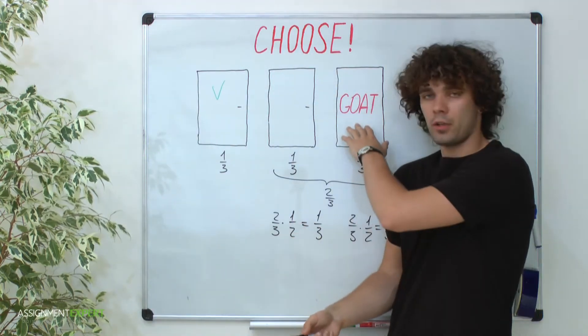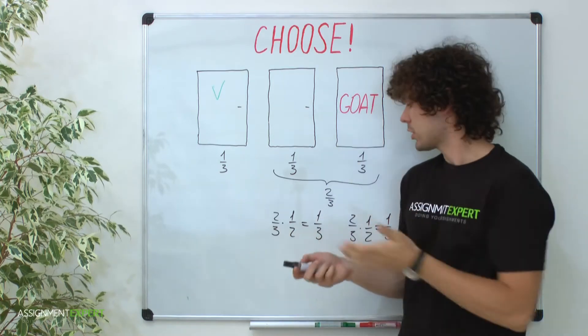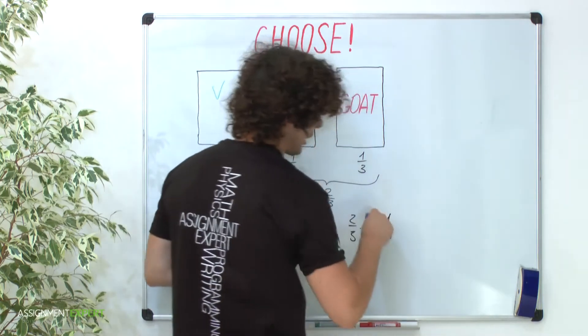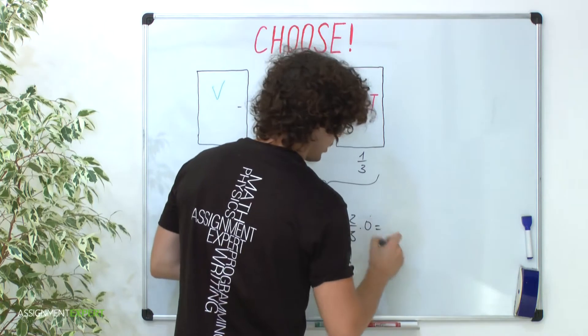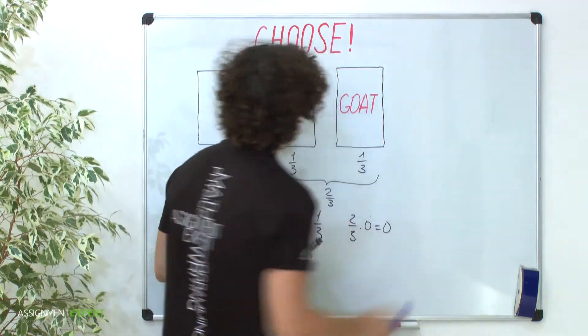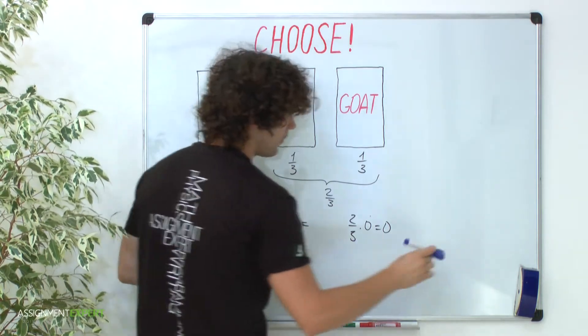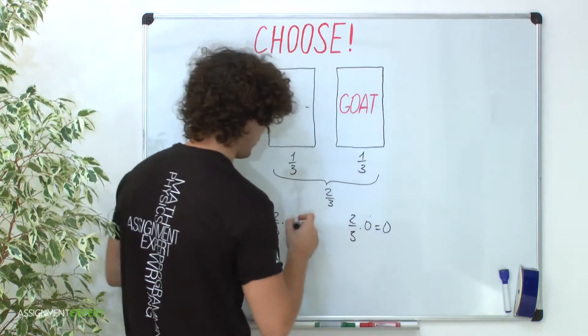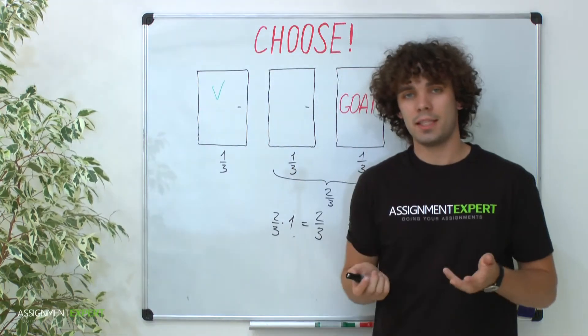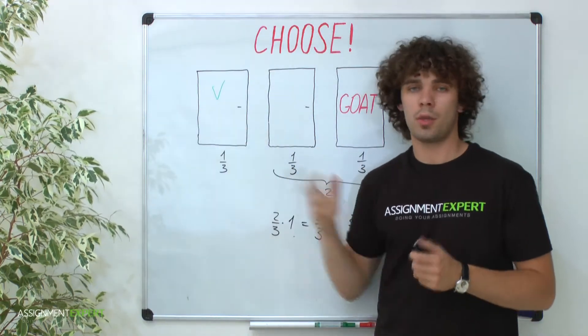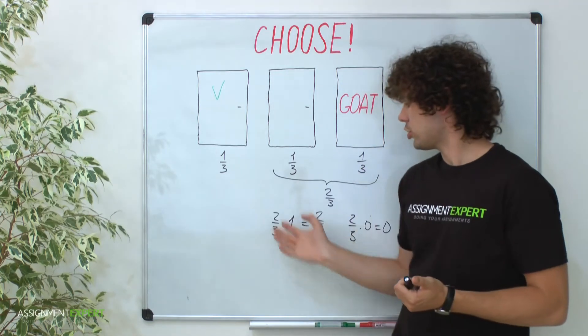Then I show you a goat over here. There is no way you can win a car when you go this door now. So the probability becomes two-thirds times zero equals zero. But the second door becomes two-thirds times one and equals two-thirds. At the same time, the first door, the one you picked initially, still has a one-third win probability. So it is obvious we are better to change the door.